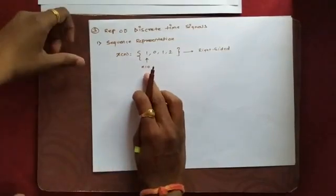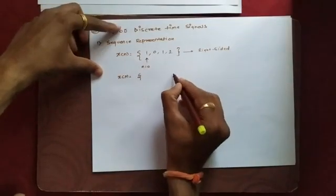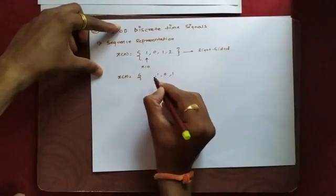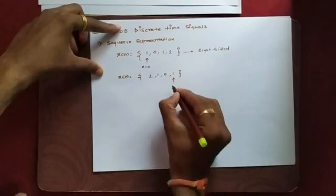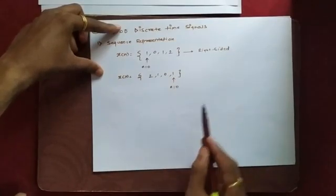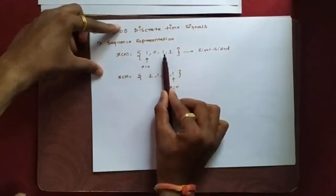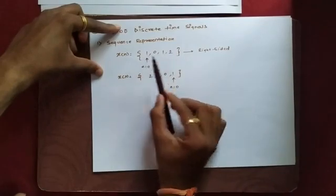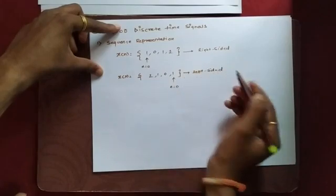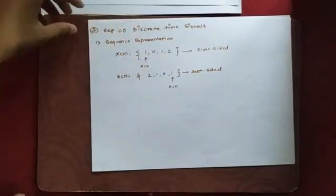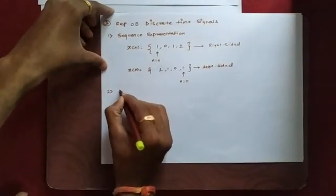The arrowhead plays a vital role in sequence representation. For another sequence x(n) = {1, 0, 1, 2} with the arrowhead placed under the last sample, the starting location is again n=0, but all samples are to the left side, giving n=0, n=−1, n=−2, and n=−3. This is called a left-sided sequence. Similarly, we can represent a both-sided sequence.